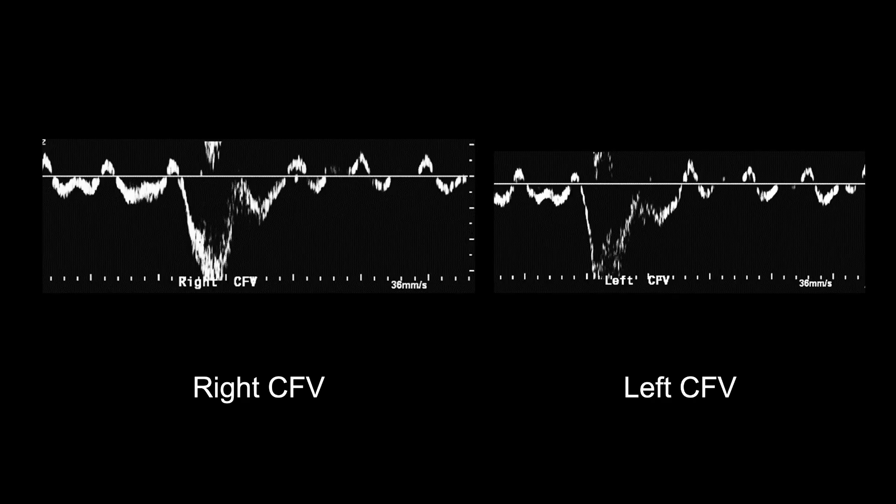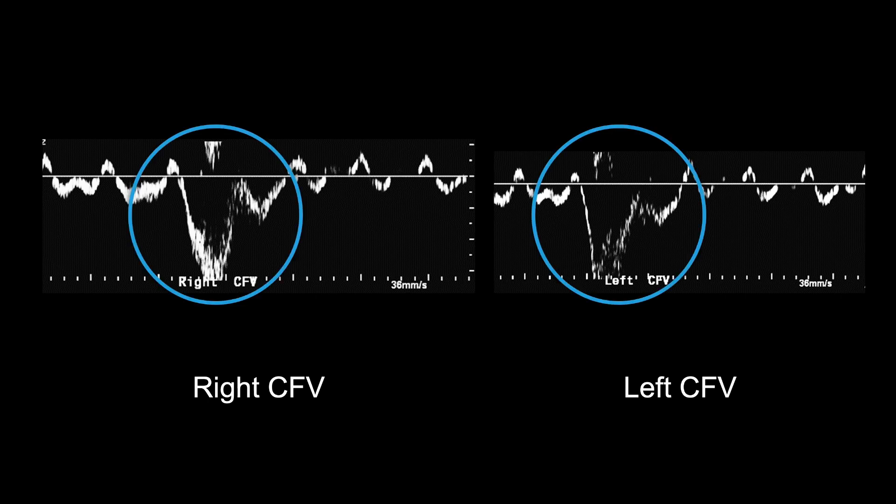In patients with right heart failure, a distal augmentation will produce a normal inverted peak below the baseline, indicating no proximal obstruction. If there was a proximal obstruction, an augment would be absent or diminished.